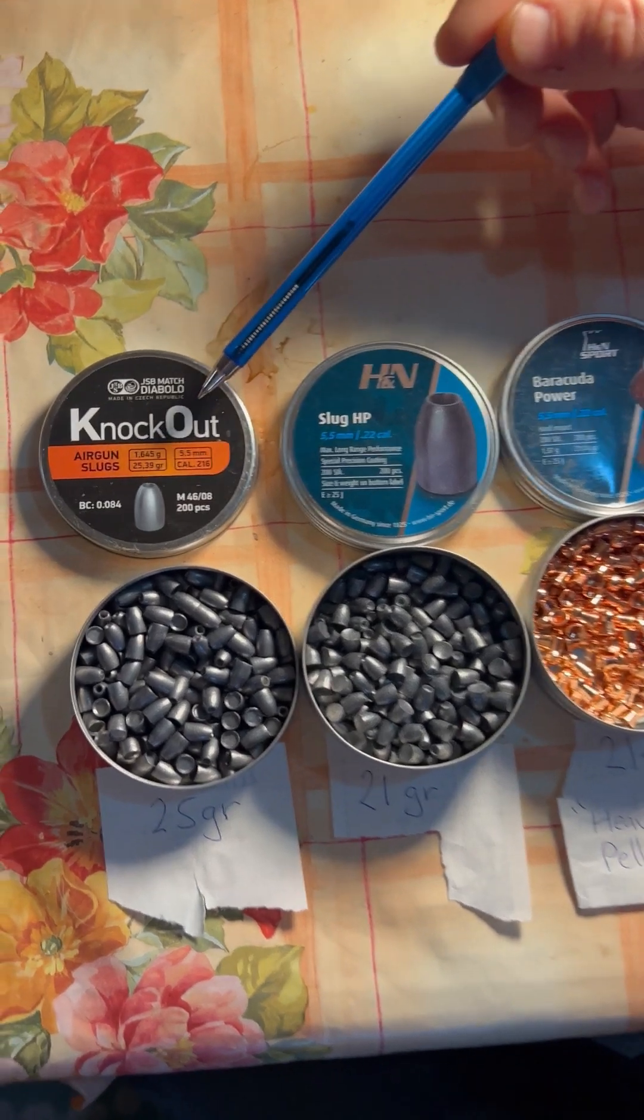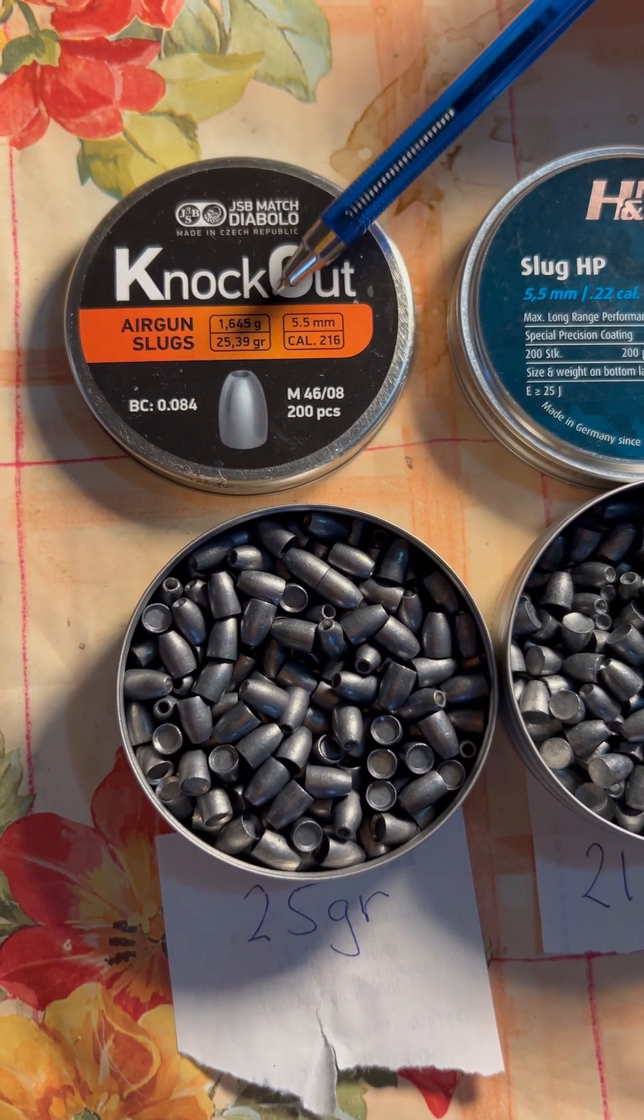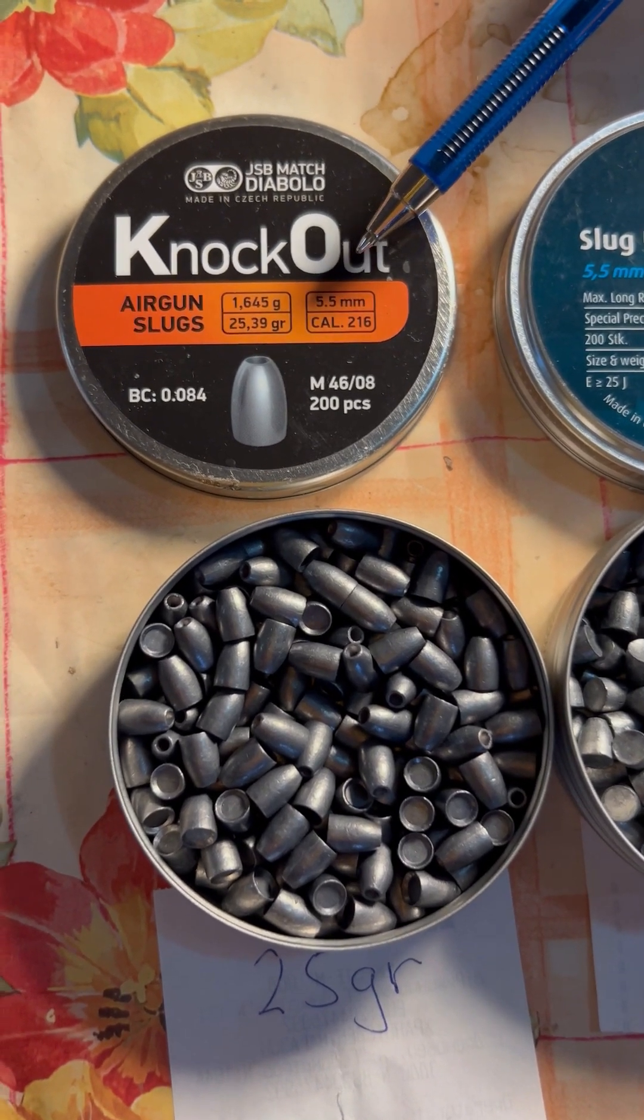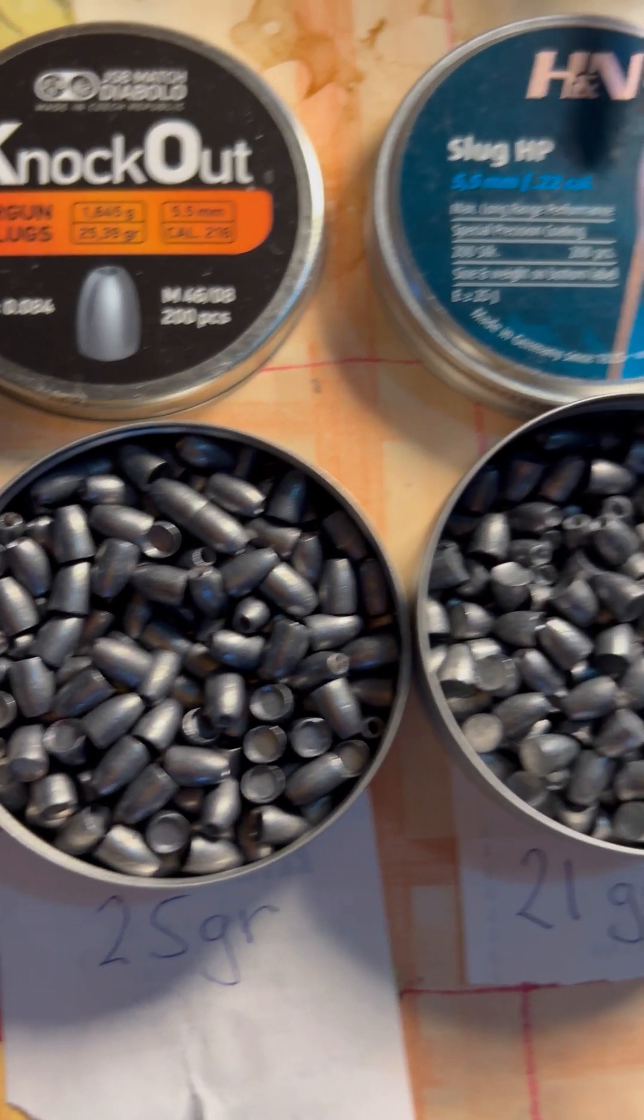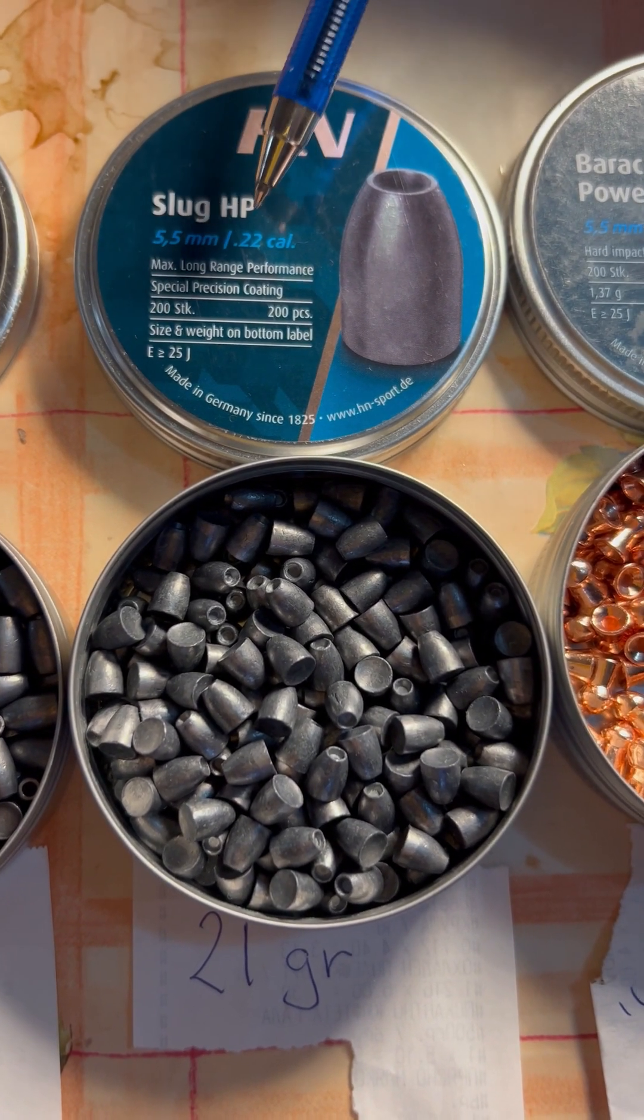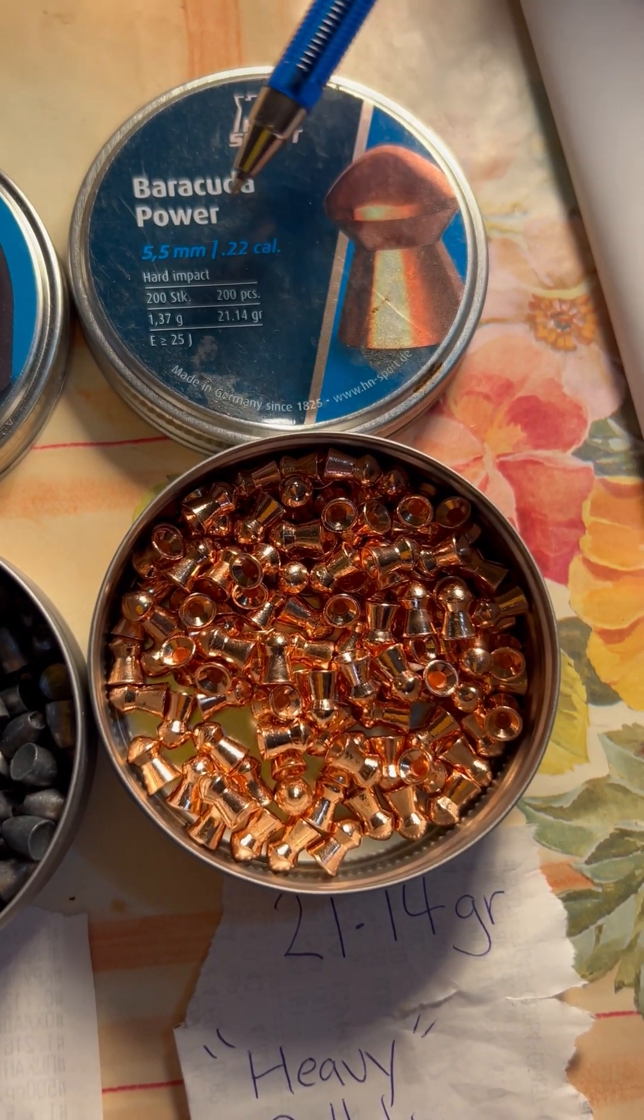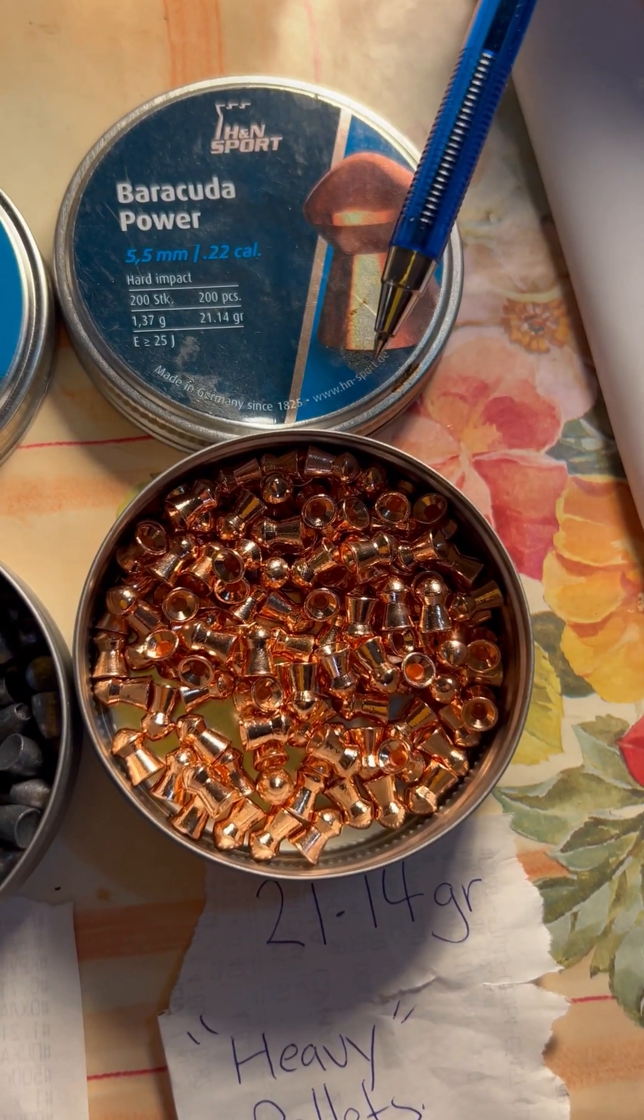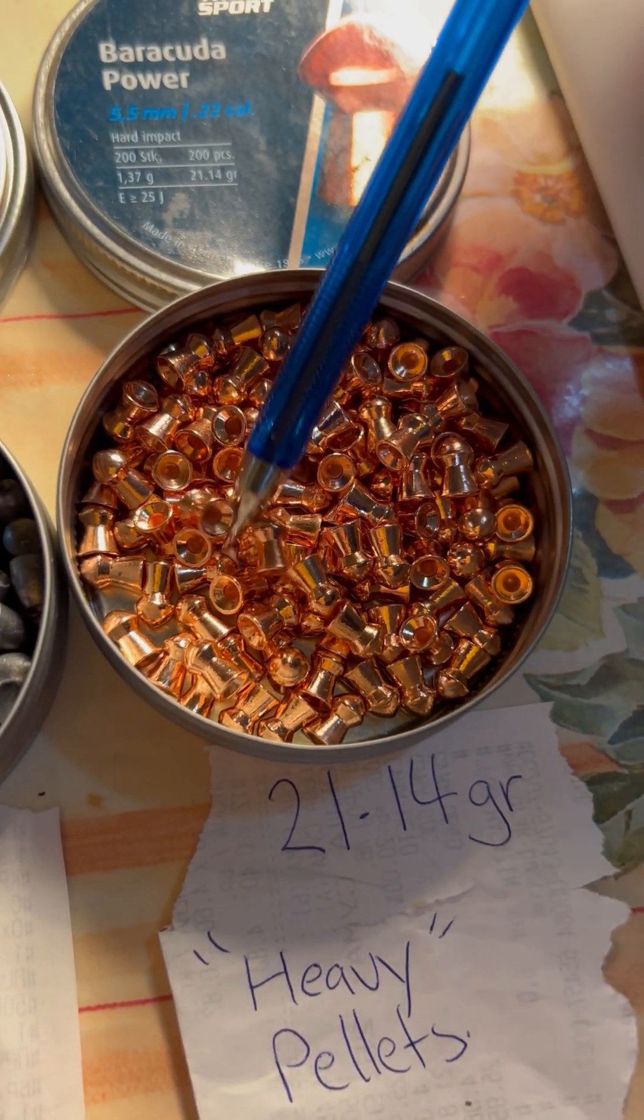So we have here knockouts. These are 25.39 grain. They're quite heavy, 5.5 millimeter slugs. Here we've got some H&Ns. These are a little bit lighter. These are 21 grain. And we've also got some 21 grain, 21.14, but basically 21 grain pellets. These are rather quite heavy pellets, these copper coated ones.